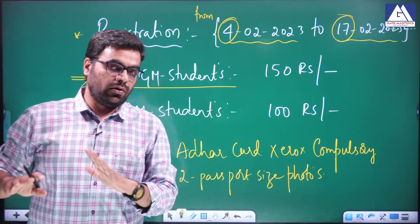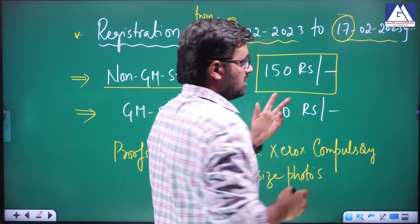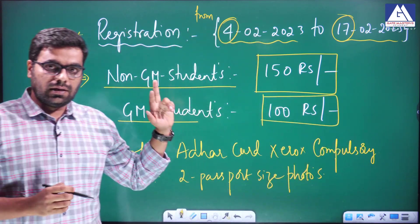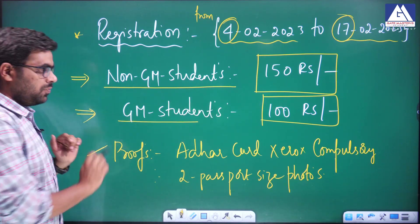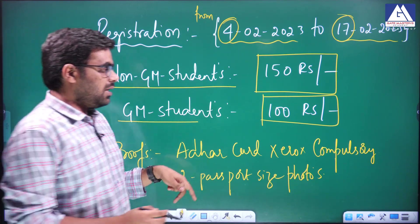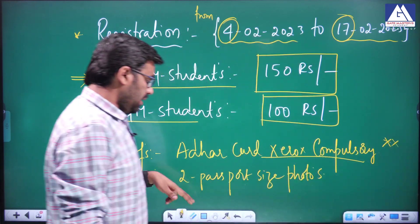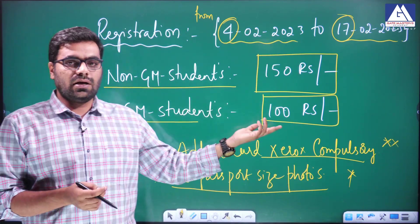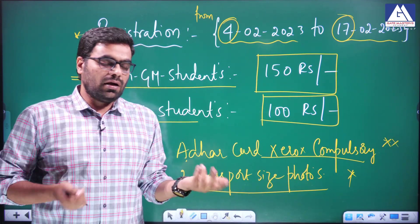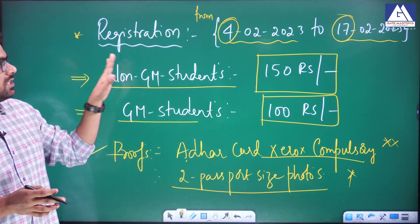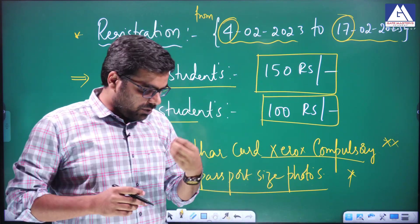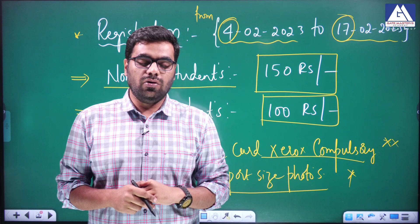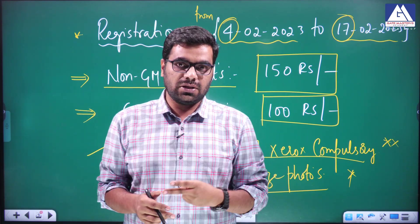Non-GM students 150 rupees, GM students 100 rupees — for both tests, AE and town planning — common price. For proofs, non-GM students need to bring their GM ID card and Aadhar card — compulsory. Without this, registration is not possible. Also bring two passport-size photos. If you are a GM student, show your ID card and you will get 100 rupees registration. If you don't have a GM ID card, you should pay 150 rupees. Registration is from 4th to 17th February.